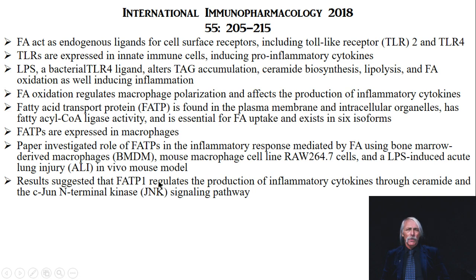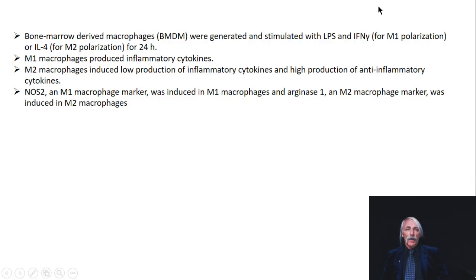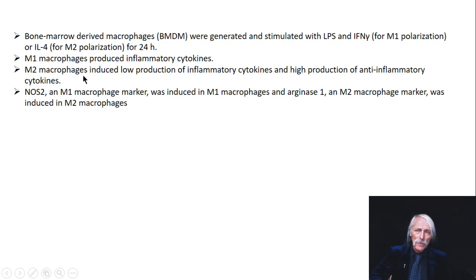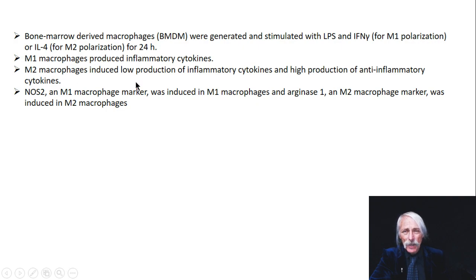BMDMs were stimulated with LPS and interferon-gamma for M1 polarization, or interleukin-4 for M2 polarization. M1 macrophages produce inflammatory cytokines. M2 macrophages have low production of inflammatory cytokines and high production of anti-inflammatory cytokines. NOS2 is an M1 macrophage marker and was induced in M1 macrophages; arginase-1, an M2 macrophage marker, was induced in M2 macrophages.